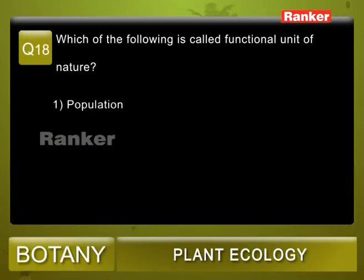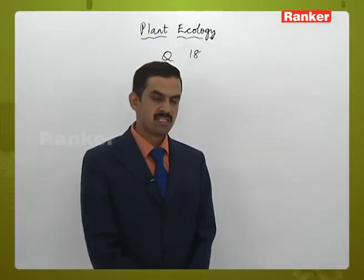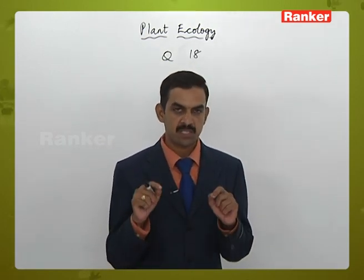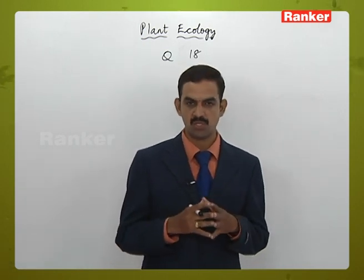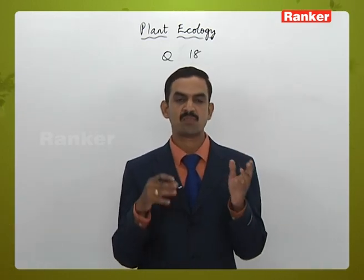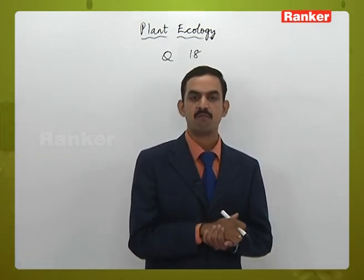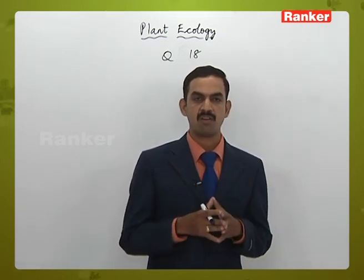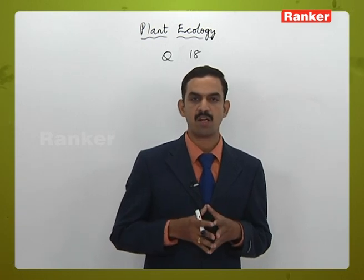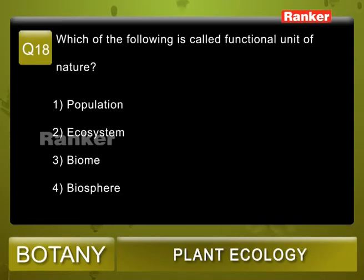Question 18: Which of the following is called the functional unit of nature? Options: 1) population, 2) ecosystem, 3) biome, 4) biosphere. Population is a group of individuals of one species in one area. Biome and biosphere are larger units. Ecosystem is the unit of ecology and is considered the functional unit of nature. Correct answer: 2.